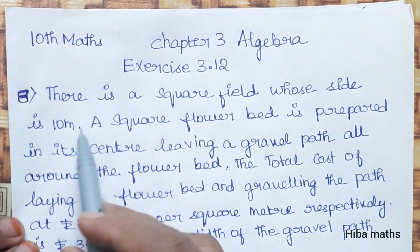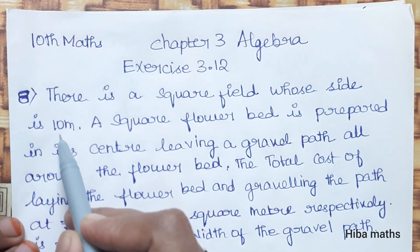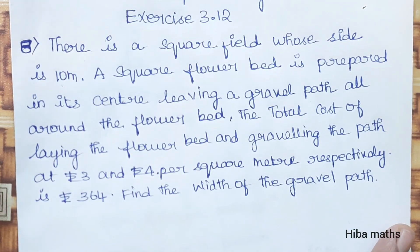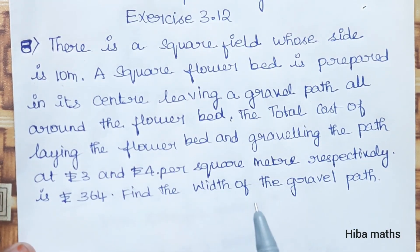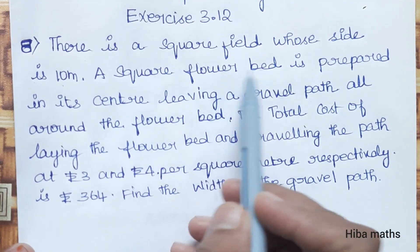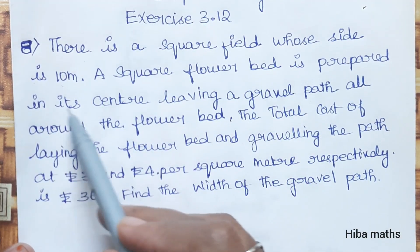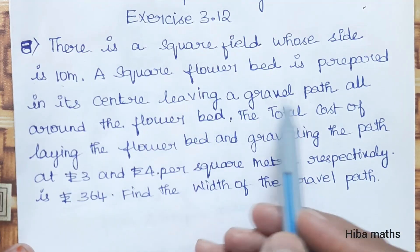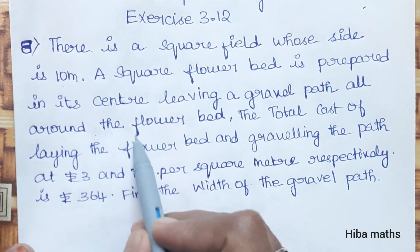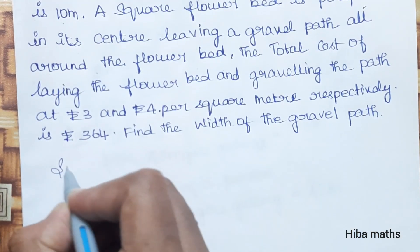There is a square field whose side is 10 meters. A square flower bed is prepared in its center, leaving a gravel path all around the flower bed. So it is like this diagram.